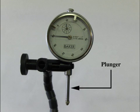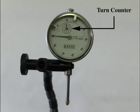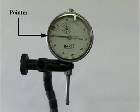Plunger transfers the up and down movement to the inside of the dial indicator. Turn counter counts how many times the needle does one complete revolution. Pointer points to the measured number.